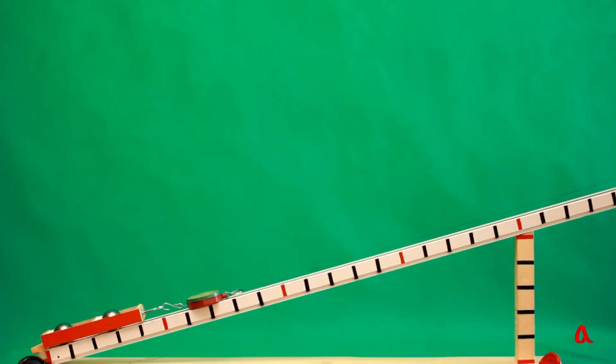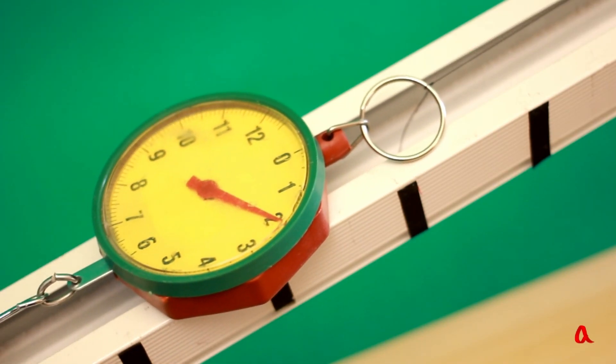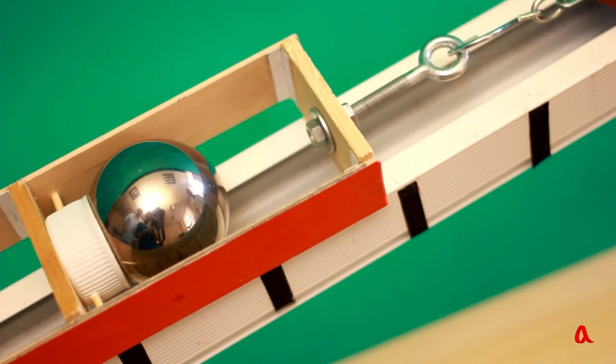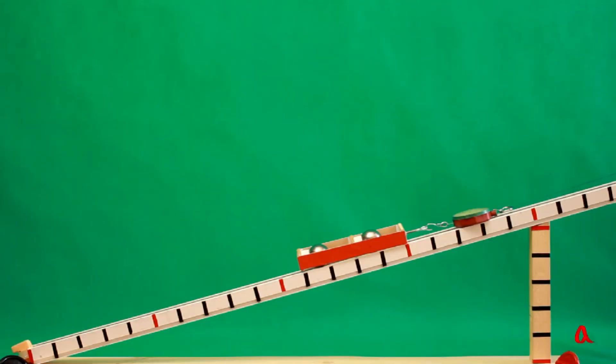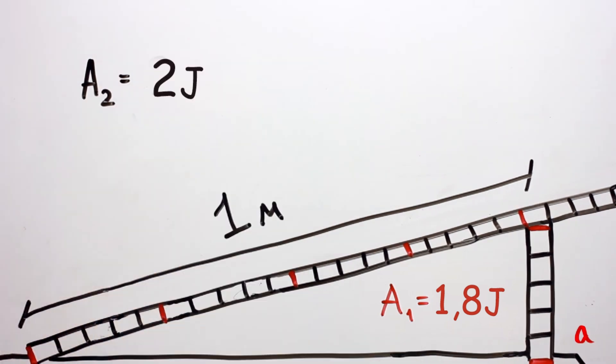Now we are going to lift the same load to the same height along a sloping plane. During the lifting, the force equals 2 Newtons. It has noticeably decreased. The length of the sloping plane is 1 metre, which means the work we are doing equals 2 Newtons multiplied by 1 metre, and that is 2 joules.